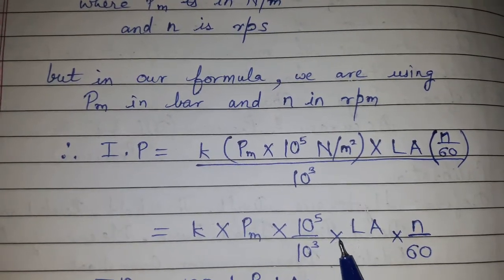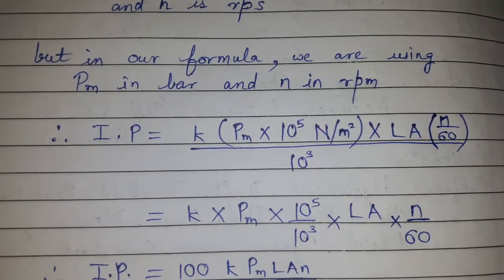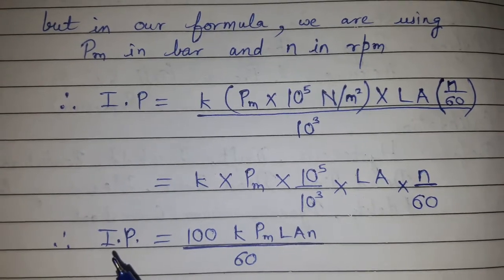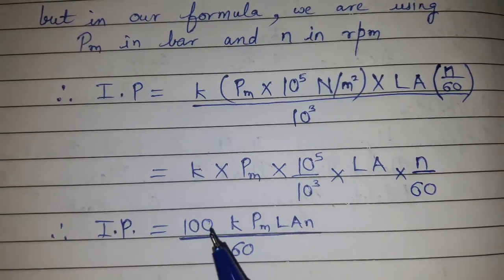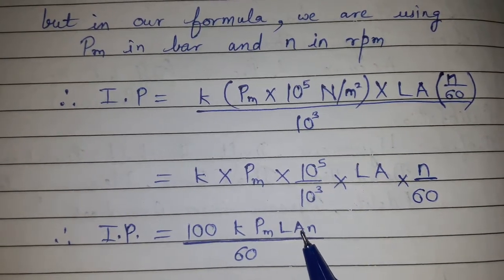After cancellation, this becomes the final formula: IP equals 100 k Pm L A n divided by 60.